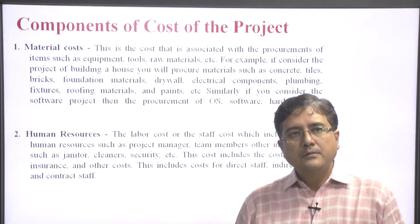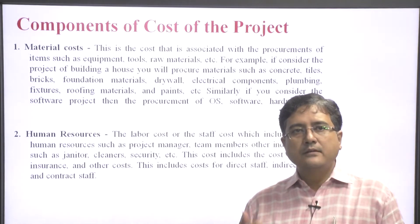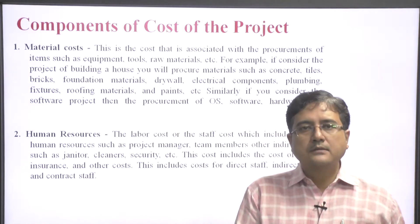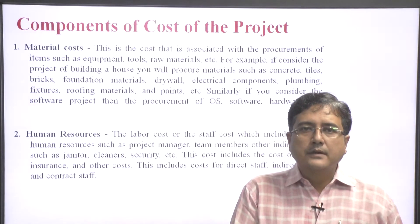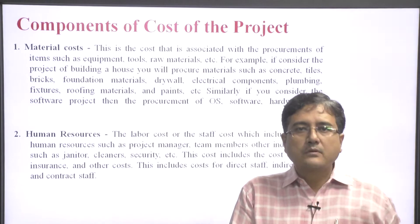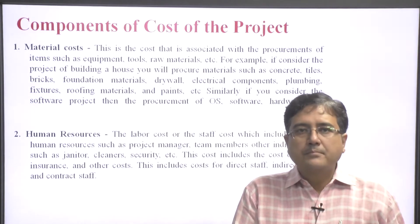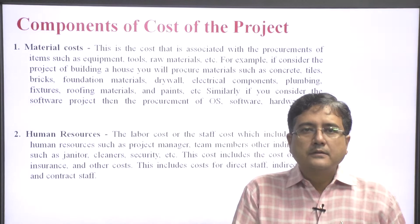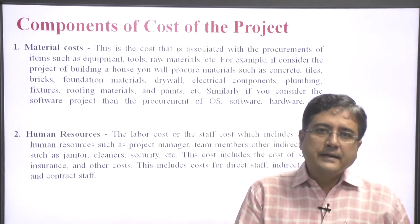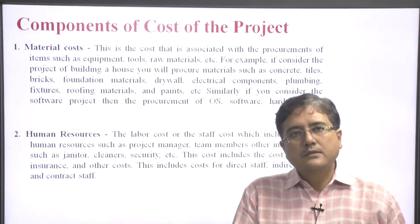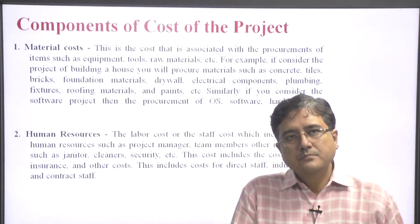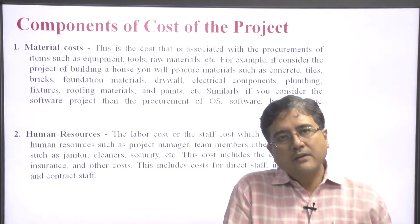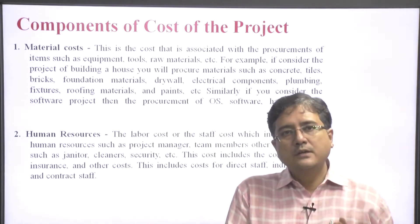For example, for building a house, we require various materials like cement, bricks, plumbing items, electrical items like wire, bulb, fan, tap, sanitary items, and for finishing, items like paint. For a software project, we require software and hardware. So every project has its own material requirements.